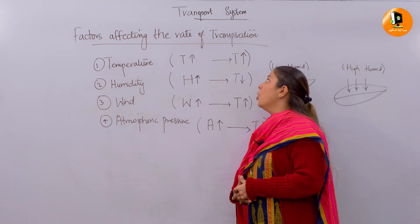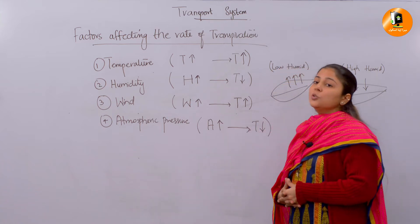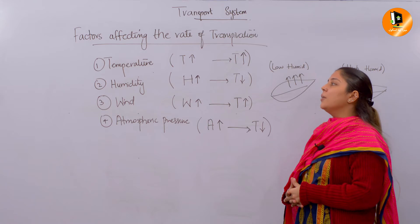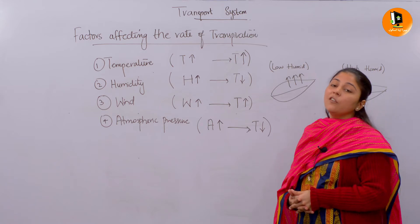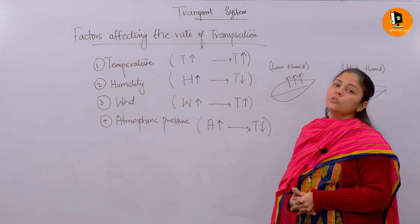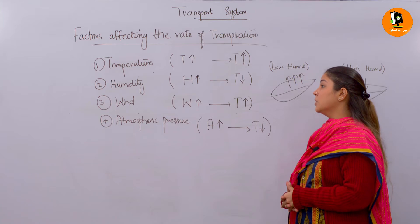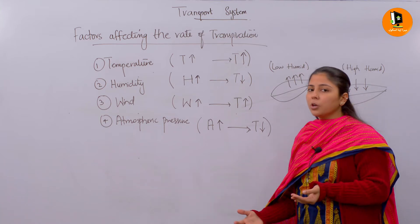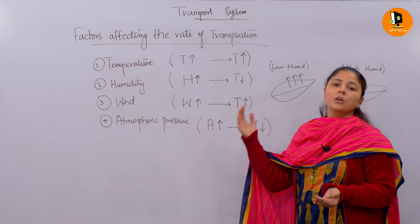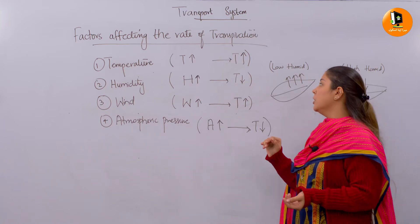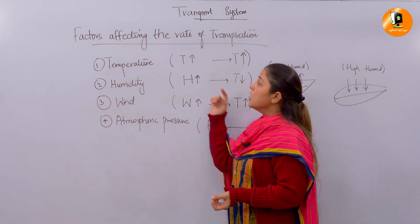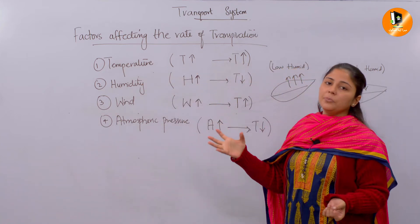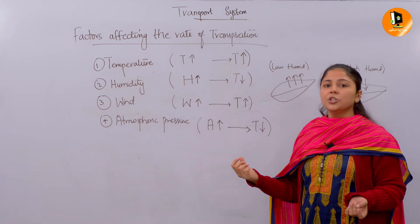So what are the abiotic factors affecting the rate of transpiration? Transpiration is the loss of water molecules in the form of water vapors through the aerial parts of the leaf. The first important factor is temperature — the level of hotness in the surrounding environment.